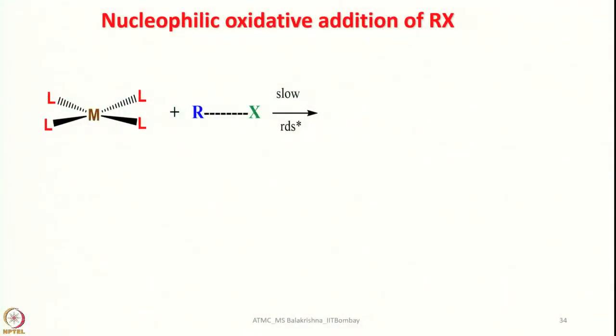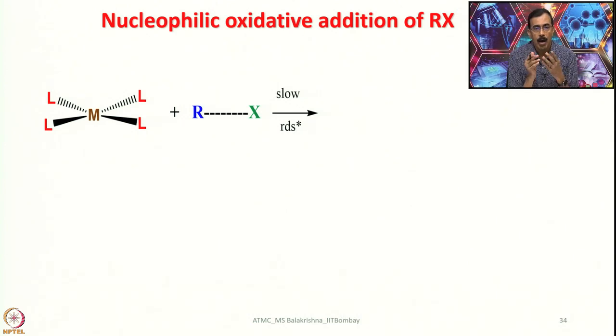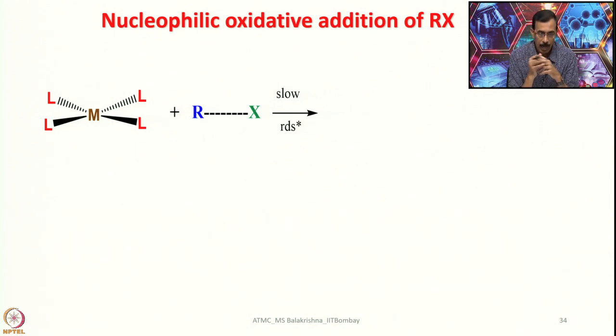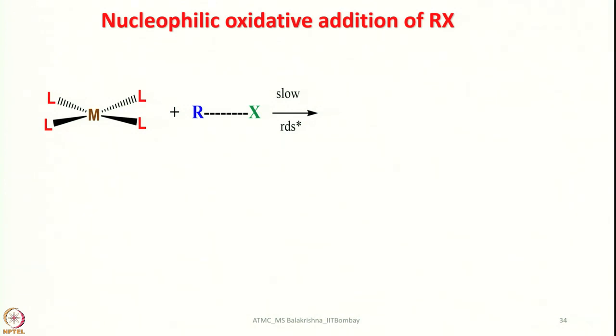Now let us look into the second mechanism followed by polar molecules, which is called nucleophilic oxidative addition. By the end of this discussion you will understand why we call it nucleophilic oxidative addition. Here, considering a square planar complex, RX is brought in and the R–X bond is polarized. When polarized, we have R⁺ and X⁻, and the addition of RX to the square planar complex is a slow, rate-determining step.